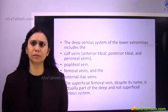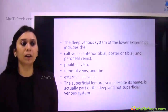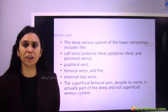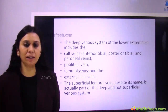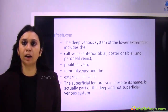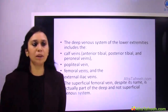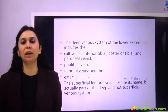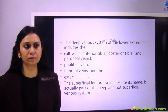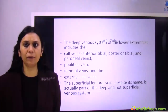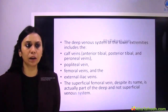What is the deep venous system? The deep venous system comprises veins of the lower extremities, including the anterior tibial, posterior tibial, and peroneal veins, the popliteal vein, calf vein, femoral vein, external iliac vein, and even the superficial femoral vein — which, despite its name 'superficial,' also falls under the deep venous system.